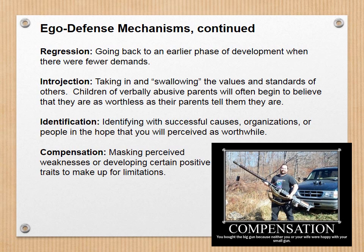Believing what somebody important says about you becomes introjection — you're injecting this negative information into your own consciousness. Identification is beginning to identify with successful causes, organizations, or people in the hope that you'll be perceived as worthwhile. For example, people with addiction issues who start going to AA or NA can suddenly become the greatest AA person ever, spouting platitudes like "meeting makers make it," because it's the first time they've felt worthwhile in a really long time.